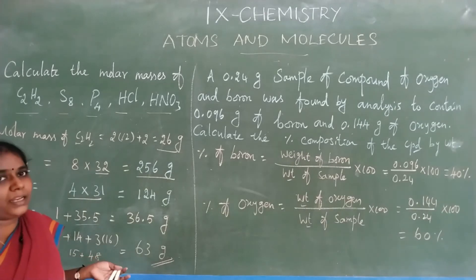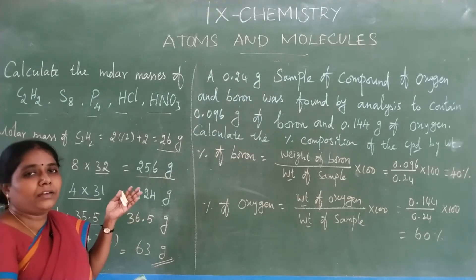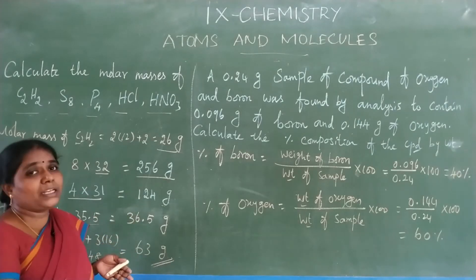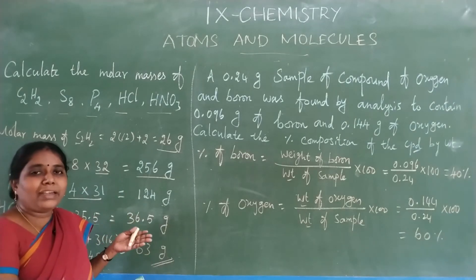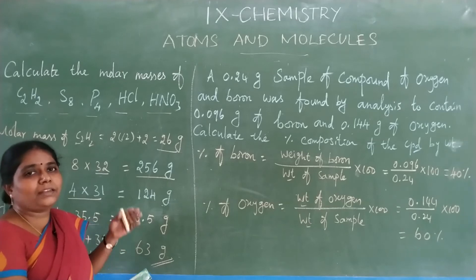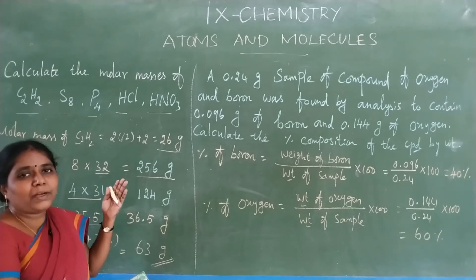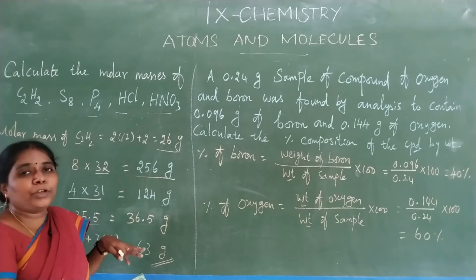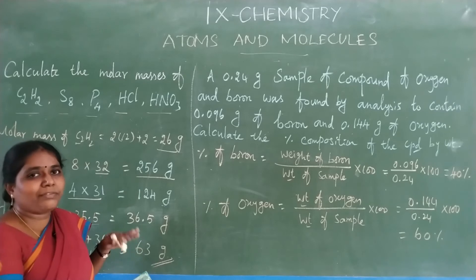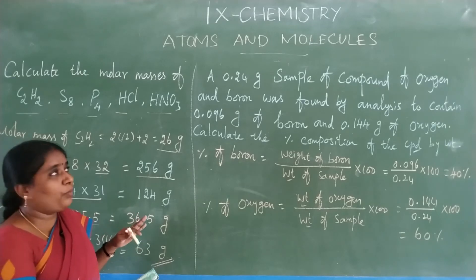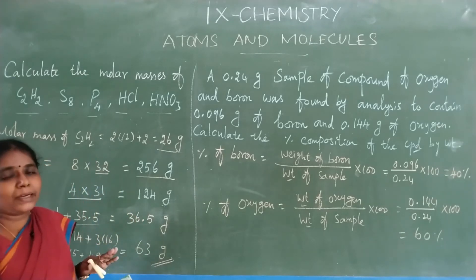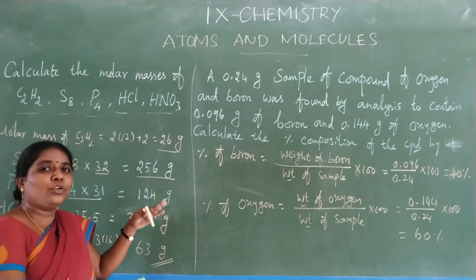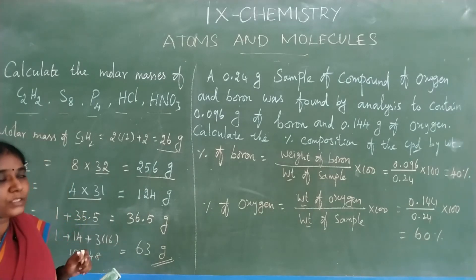To summarize: molecular mass, formula unit mass, and molar mass are calculated the same way. The difference is that formula unit mass is for ionic compounds, and molar mass uses grams (G) instead of unified mass (U).